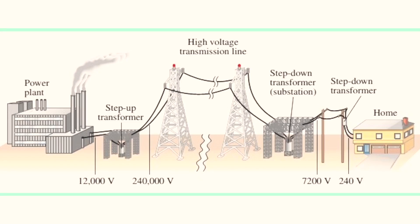Higher voltage on a skinny wire means less current and less energy is wasted, but there was no way to step that voltage down once it got to a house, so they couldn't even use it for things like light bulbs. Today, we use AC power and transformers to get around this problem. We can step up the voltage to ridiculously high levels, drop the current to save energy, and then step the voltage down when it reaches our homes so it doesn't kill anyone.